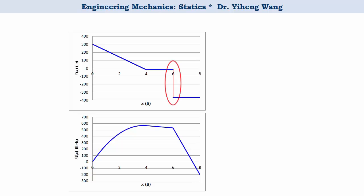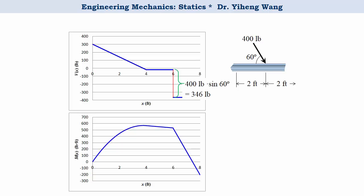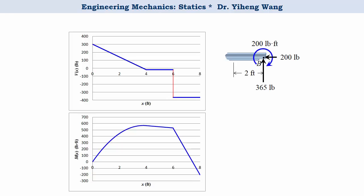At one location there is a concentrated load applied, which corresponds to a step change in the shear force diagram with magnitude equal to the vertical component of the applied force — 346 pounds. Similarly, at point B there is another concentrated load applied, and on the shear force diagram there is another step change with magnitude 365 pounds that returns the curve back to zero.